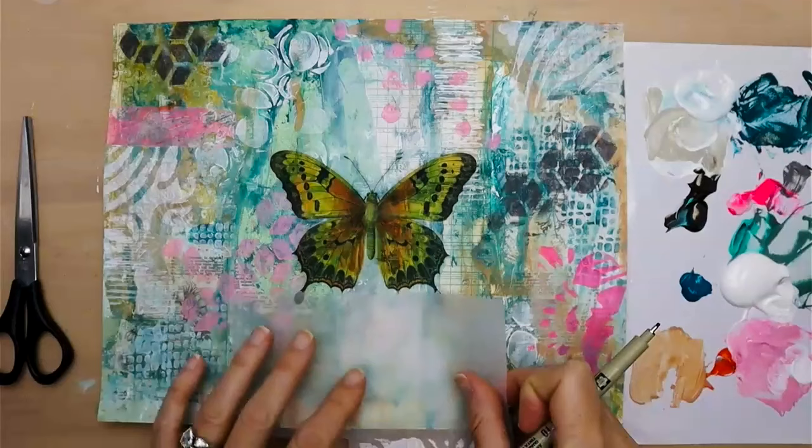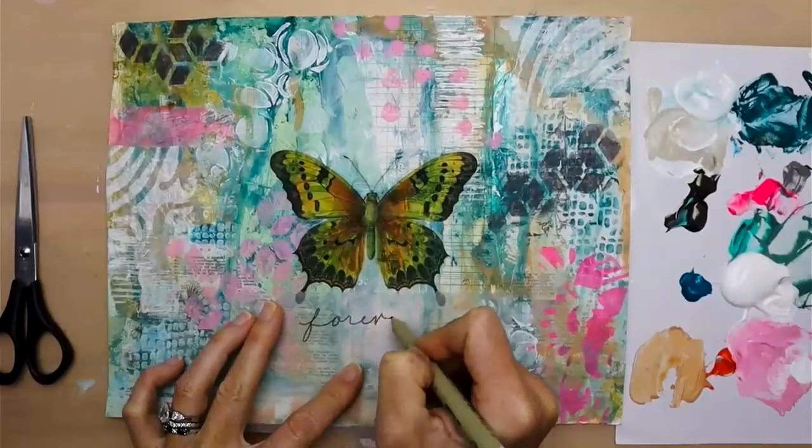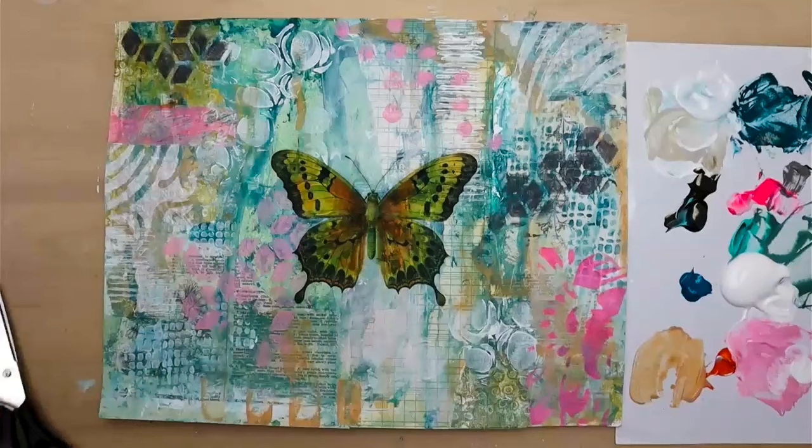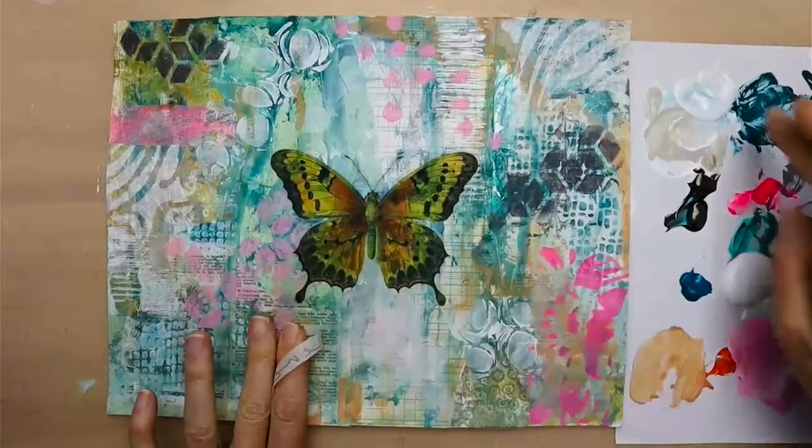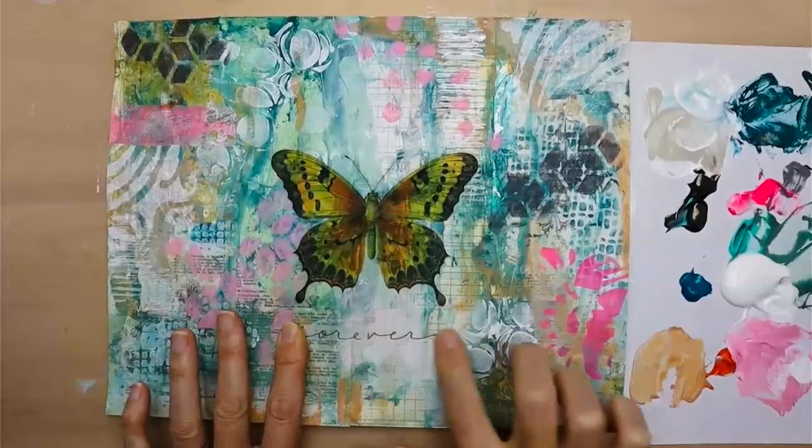And then I wanted to just show you how I make the actual sentiment. I just draw on, I write on deli paper, cut it out, and then glue it down. It's real simple and it looks kind of cool. I always play around with the script. Sometimes I write it, just print it, or sometimes I do cursive. Depends on what I think goes best.